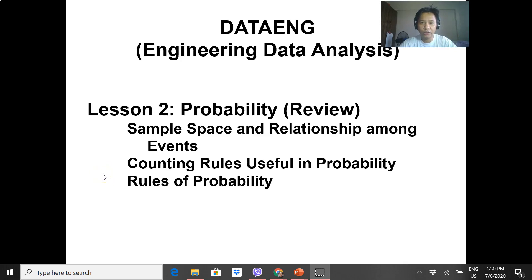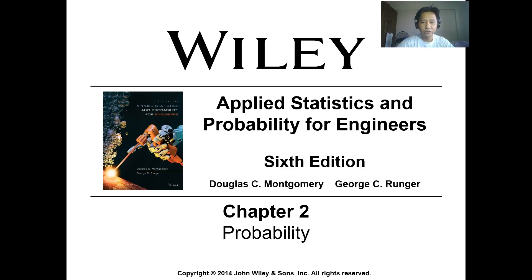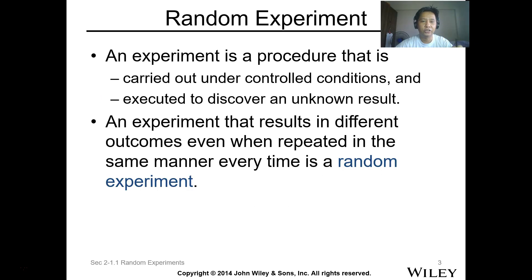We'll start with Lesson 2: Probability — this is review only. We'll discuss sample space, relationship among events, the counting rule useful in probability, and rules of probabilities. This is Chapter 2 of the textbook, 'Applied Statistics and Probability for Engineers,' 6th edition, by Montgomery and Runger.